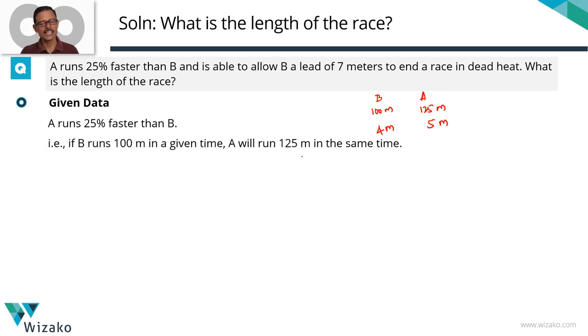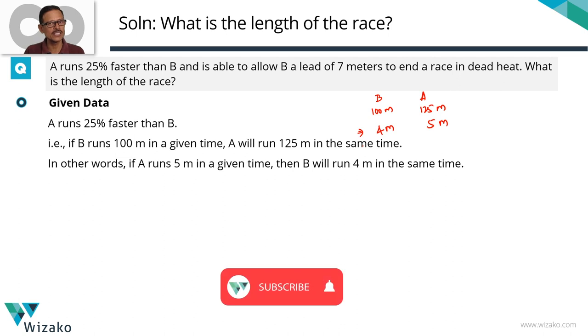So when B runs 100, A runs 125, or when A runs 5, B runs 4 meters. Let's take this ratio as a starting point for us having decoded this information. So A runs 5 meters, B runs 4 meters.